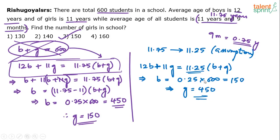Why did this change? Consider: the average age of boys is 12 years and the average age of girls is 11 years. In the initial case the overall average was 11.75. There is a difference of only one unit between the two groups, and the average of the class is 11.75, which is closer to the boys' average.